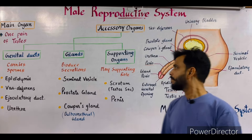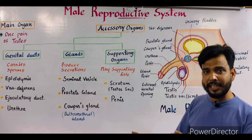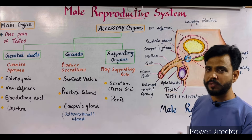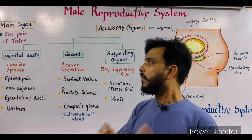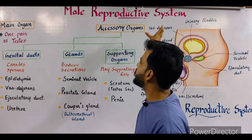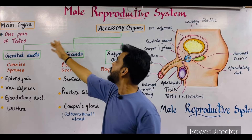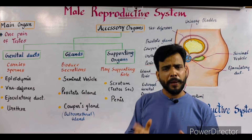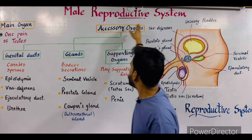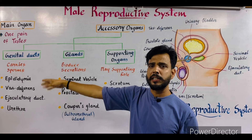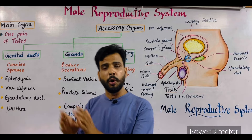In this video I will discuss the male reproductive system in detail — different parts, their functions, and their structures. Starting with this chart, the male reproductive system can be divided into two main parts: the main organs and the accessory organs. The main organs are one pair of testes, while the accessory organs can be further divided into three different categories.